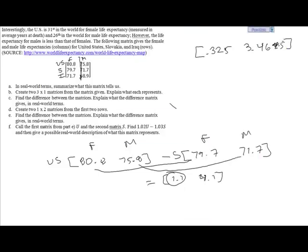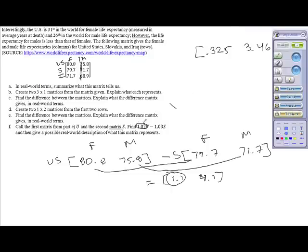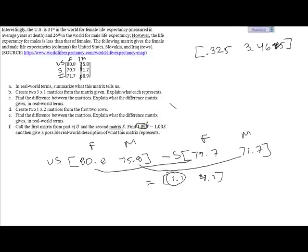There are a number of ways to really explain this. 1.02 means there's a growth in the life expectancy in US across the board for males and females. So basically we're taking this matrix and multiplying both of these values by 1.02. There's roughly a 2% increase in the life expectancy for females and males in the US. Now over here for Slovakia there's a 3% growth for both females and males. And now this represents the difference between those after US life expectancy go up by 2% and Slovakia life expectancy go up by 3%.